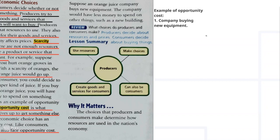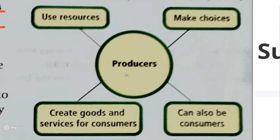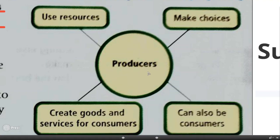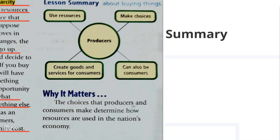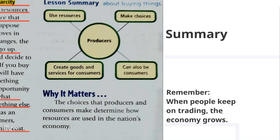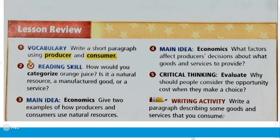To summarize: producers are in the center of the economy. Producers use resources, make choices about goods and services for consumers, and can also be consumers themselves. Why does it matter? The choices that producers and consumers make determine how resources are used in the nation's economy. When people keep on trading, the economy grows. Please read the lesson review on your own — some of those questions will appear in your Socrative task on Wednesday. Make sure you know the meanings of 'producer' and 'consumer.'